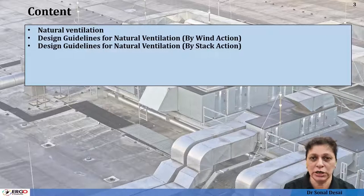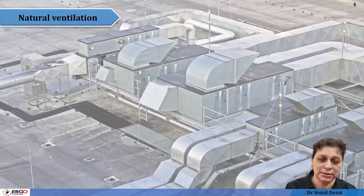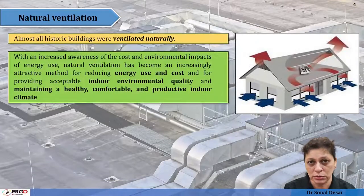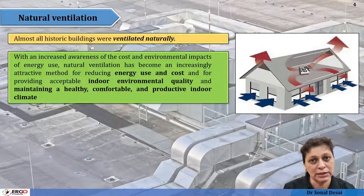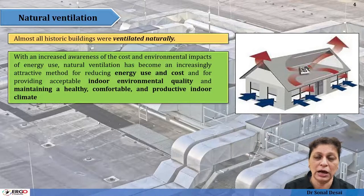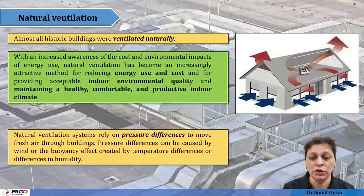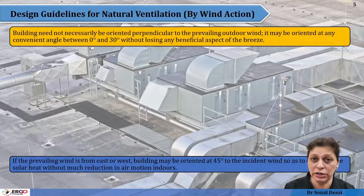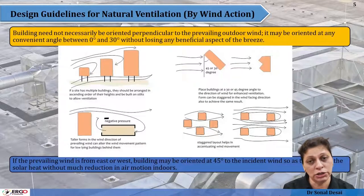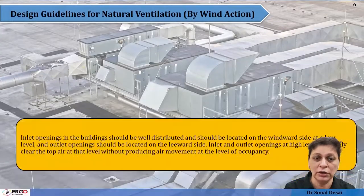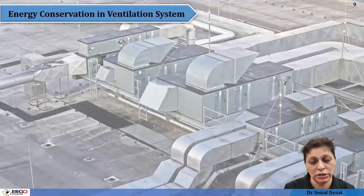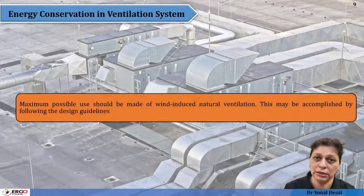The ventilation section includes both natural and mechanical ventilation systems. Natural ventilation was used in older buildings and has the advantage of being nature-connected. With the rise in energy costs, many mechanical buildings are now being converted back to natural ventilation. Design considerations include building siting, orientation, and achieving natural circulation and ventilation through wind action as well as stack action.